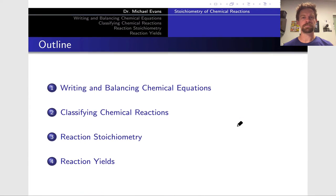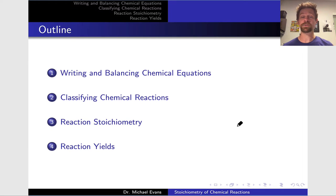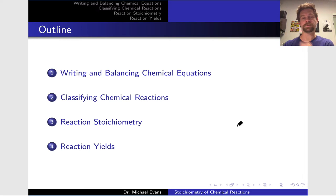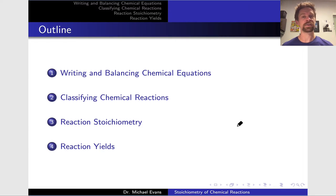As a general outline, we're going to begin with the anatomy of a chemical equation — a representation of a chemical reaction in textual form — and talk about writing and balancing chemical equations. Then we'll move into classifying chemical reactions, focusing on three broad types: precipitation and dissolution, acid-base reactions, and oxidation-reduction or redox processes. Then we'll dig into reaction stoichiometry and mass and mole relationships, and finally we'll talk about reaction yields, which give us a sense of how well we did relative to the theoretical when we run an actual reaction.